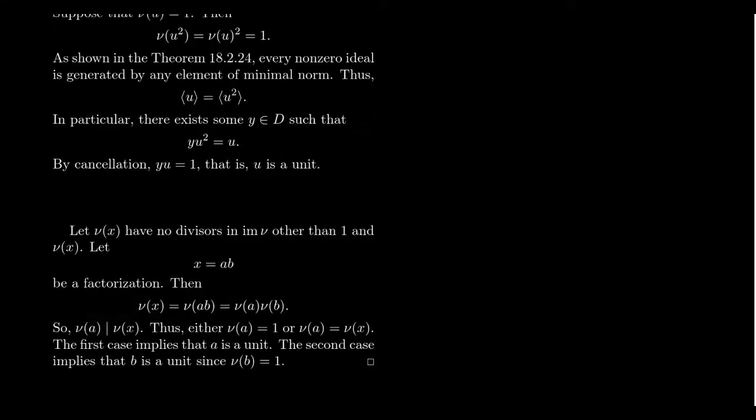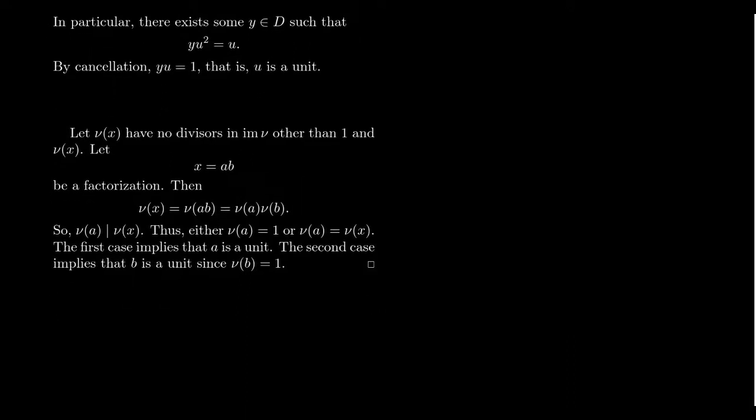So studying units is very effective when you have this multiplicative Euclidean norm. Let's take a look at the second part of this proof. Now we want to consider the conditions that can guarantee when an element is irreducible, when we consider what its norm is doing. So consider the natural number nu of X such that none of the divisors of nu of X appear in the image of nu with the obvious exceptions of one, because that's the norm of the unity, and then the norm of X. So suppose there's no other factors of this norm inside of the image here.